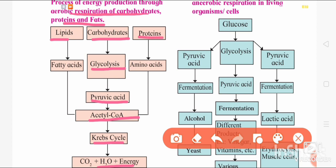For lipids, the simplest form is fatty acids. Proteins are converted into amino acids. Both then form acetyl coenzyme A, which undergoes oxidation in the mitochondria through the tricarboxylic acid (Krebs) cycle. At the end, we again get CO2 and H2O along with the production of energy.